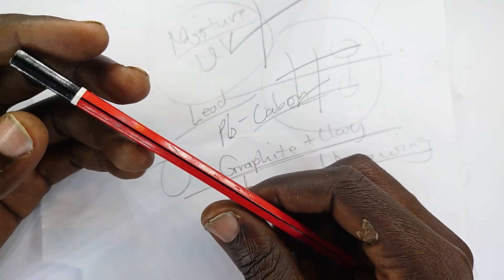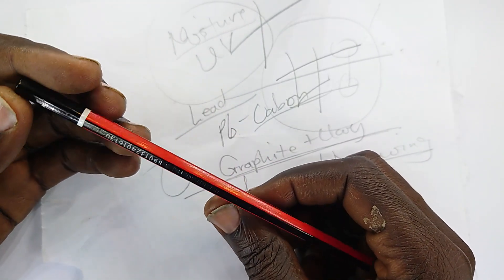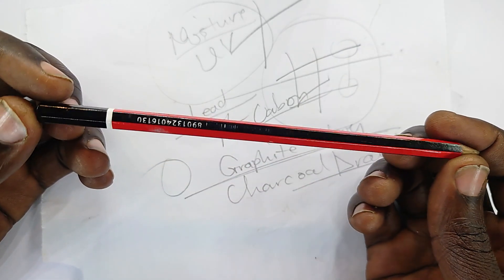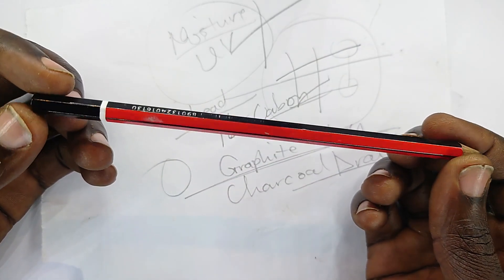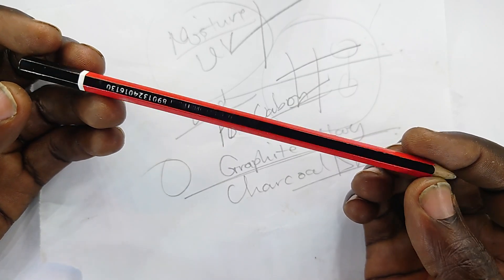So in case you want to inscribe something onto something in a manner that it never fades with time, then the pencil is your best bet.